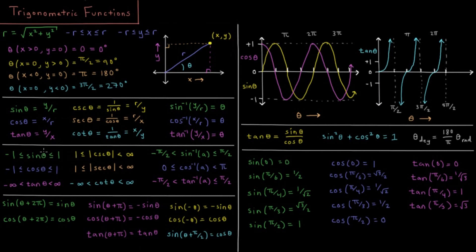Some helpful functions when you think about these things. We can define the sine of theta, the sine of our angle. That's equal to the opposite side of the triangle, or its height, divided by the hypotenuse length r. So sine theta equals opposite over hypotenuse.